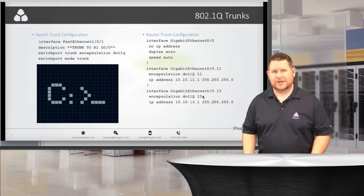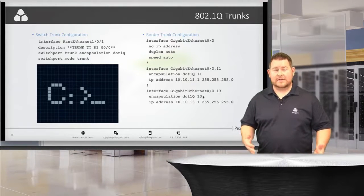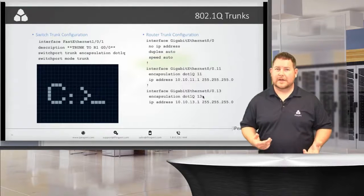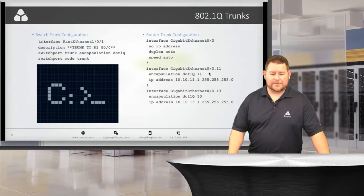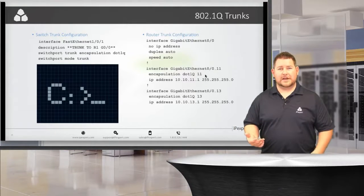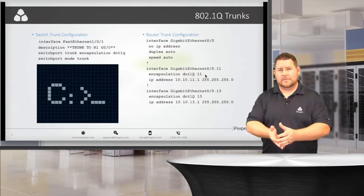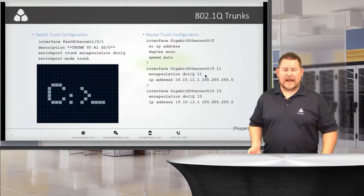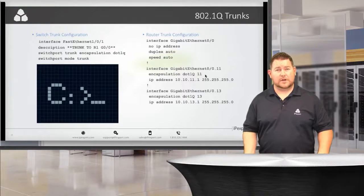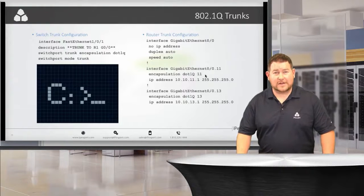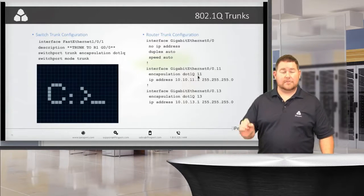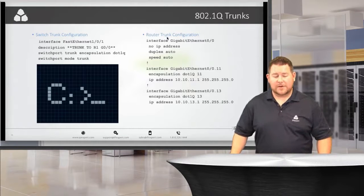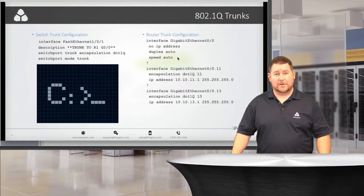You can add the keyword 'native' at the end of the encapsulation command to indicate you're expecting untagged traffic for a specific native VLAN. If the exam asks you to use native VLAN 11 on a trunk port, configure 'switchport trunk native vlan 11' on the switch, and 'encapsulation dot1q 11 native' on the router sub-interface. Alternatively, you could put that configuration on the physical interface since it handles untagged traffic.